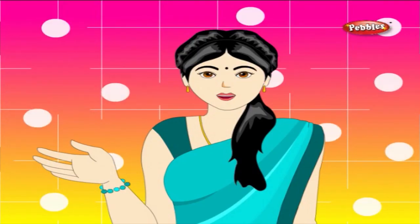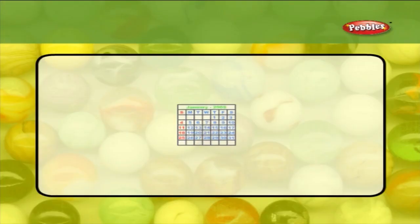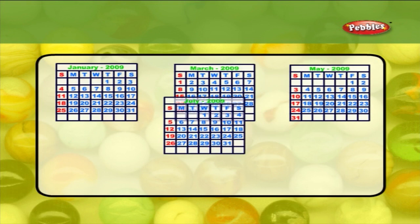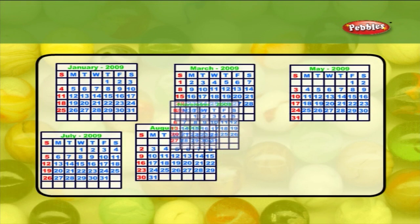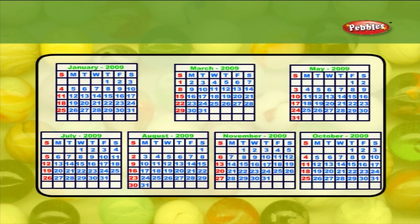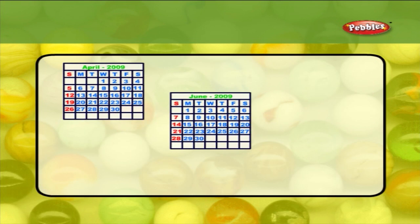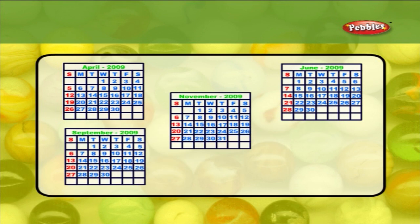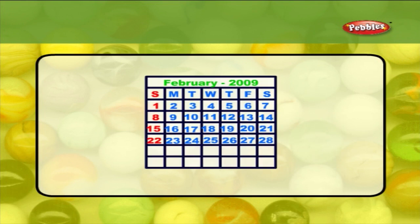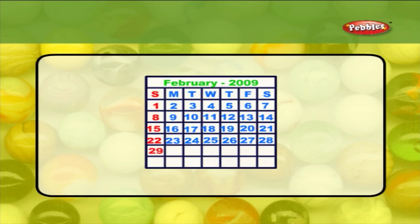Namely February, June, September and November have only 30 days a month. February usually has 28 days in the month, but once in 4 years it has 29 days, and that year is called the leap year.